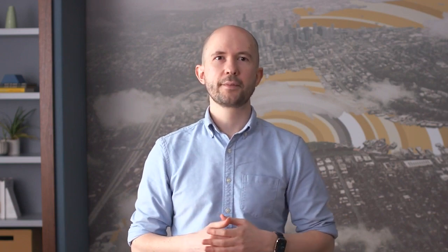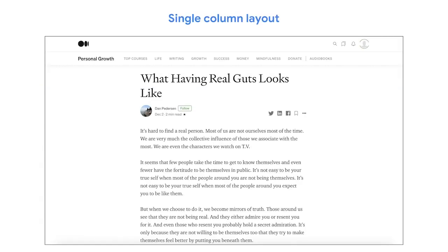There are multiple ways a website homepage can be laid out. First up, let's discuss single column website layouts. As the name implies, single column layouts have only one column for content. Take a peek at this blog post on Medium — the entire article is in one single vertical column.